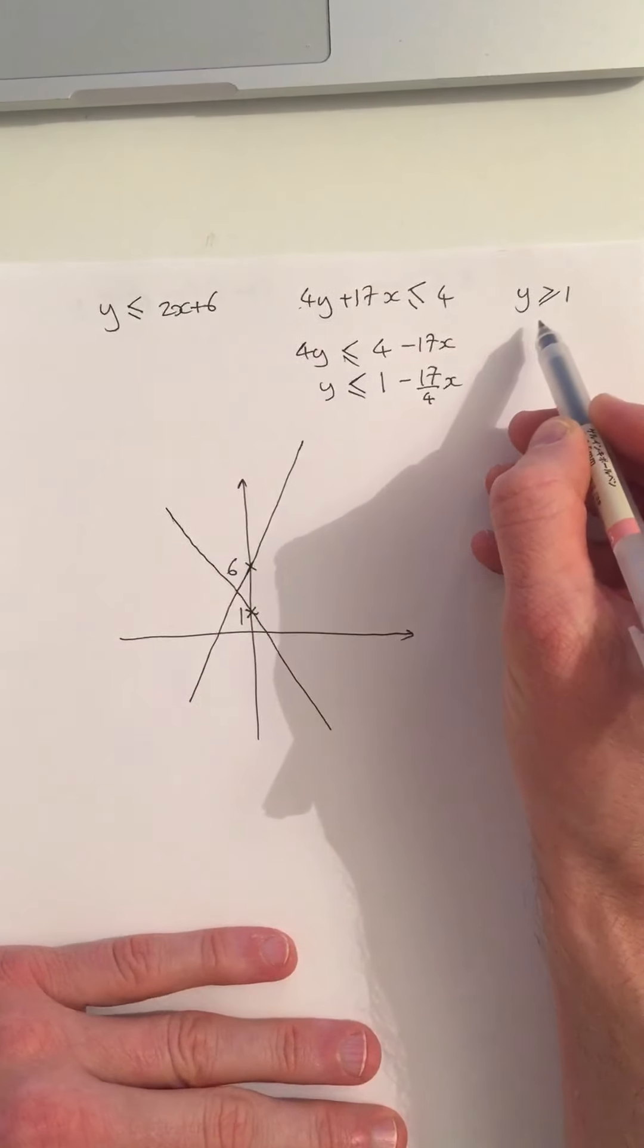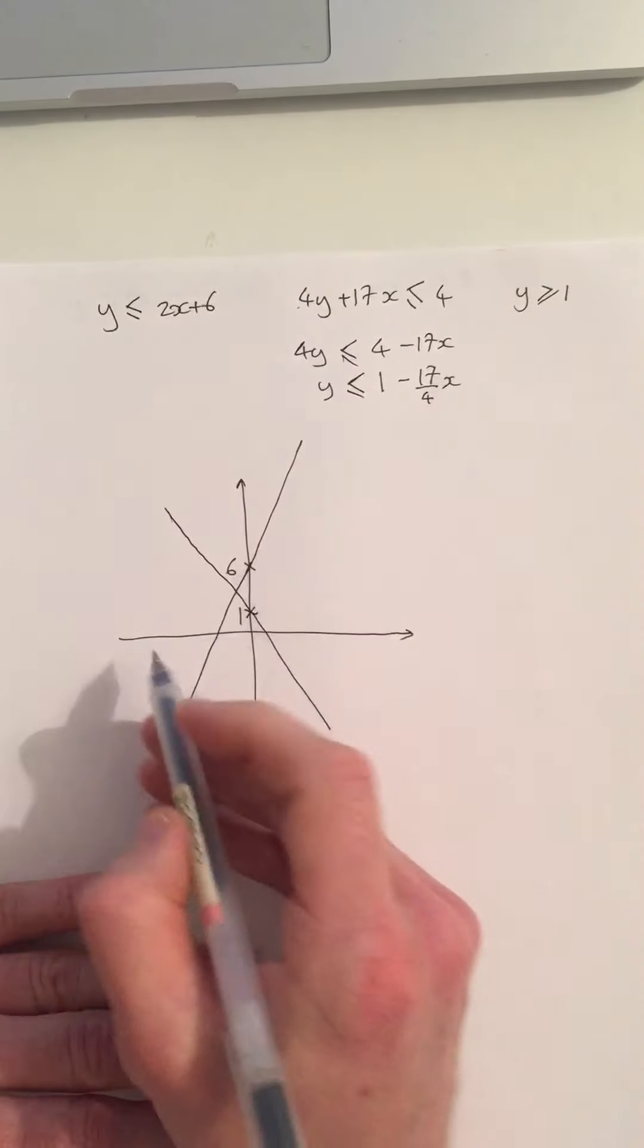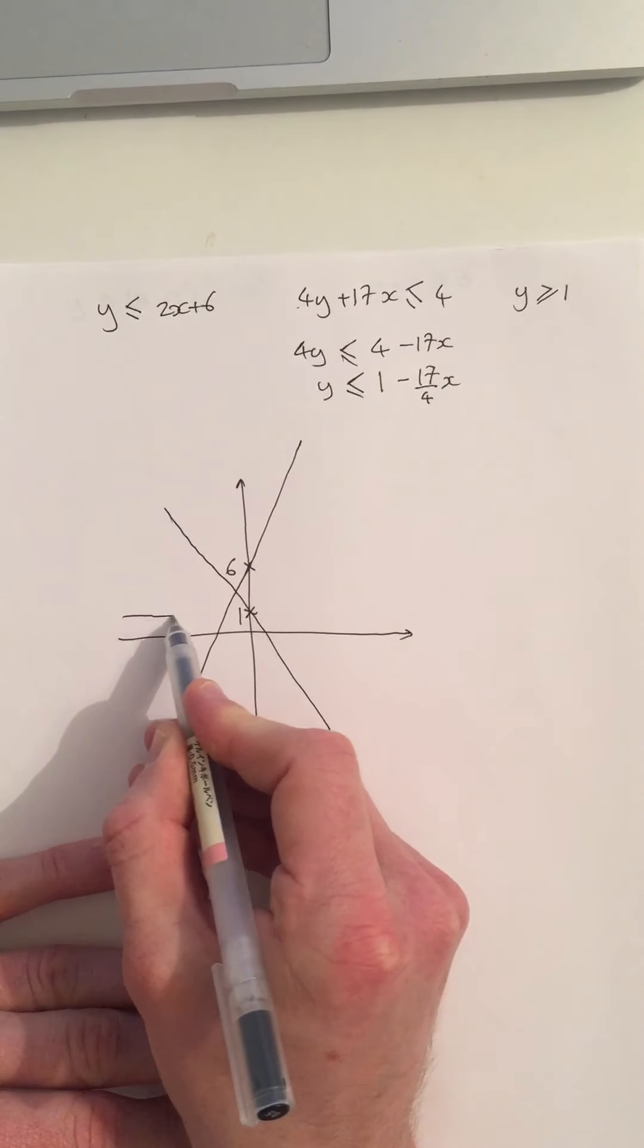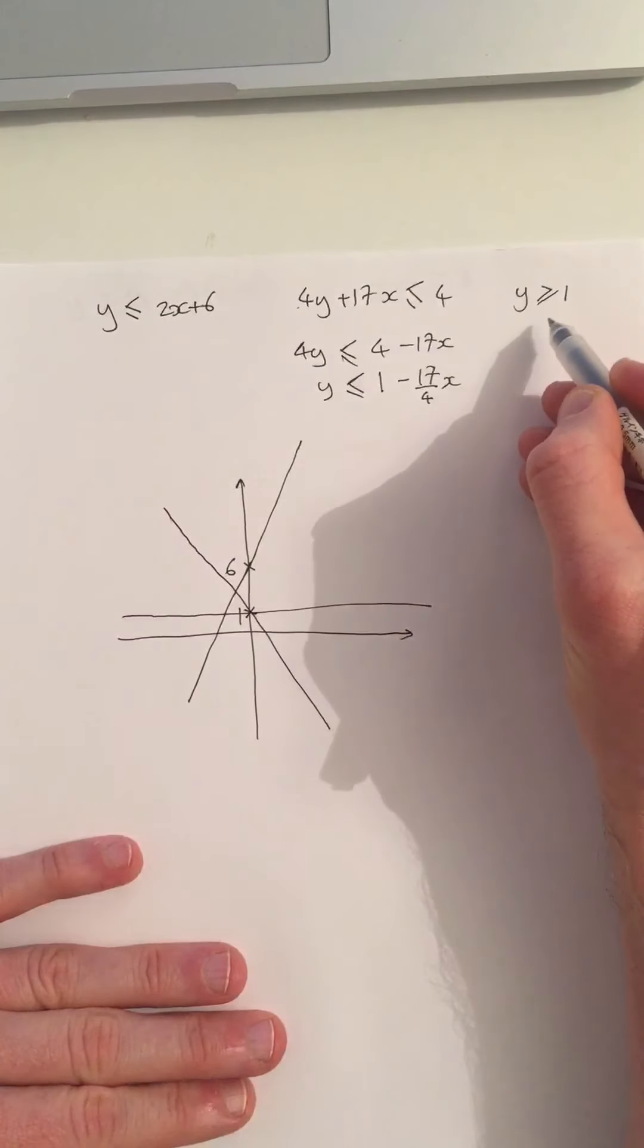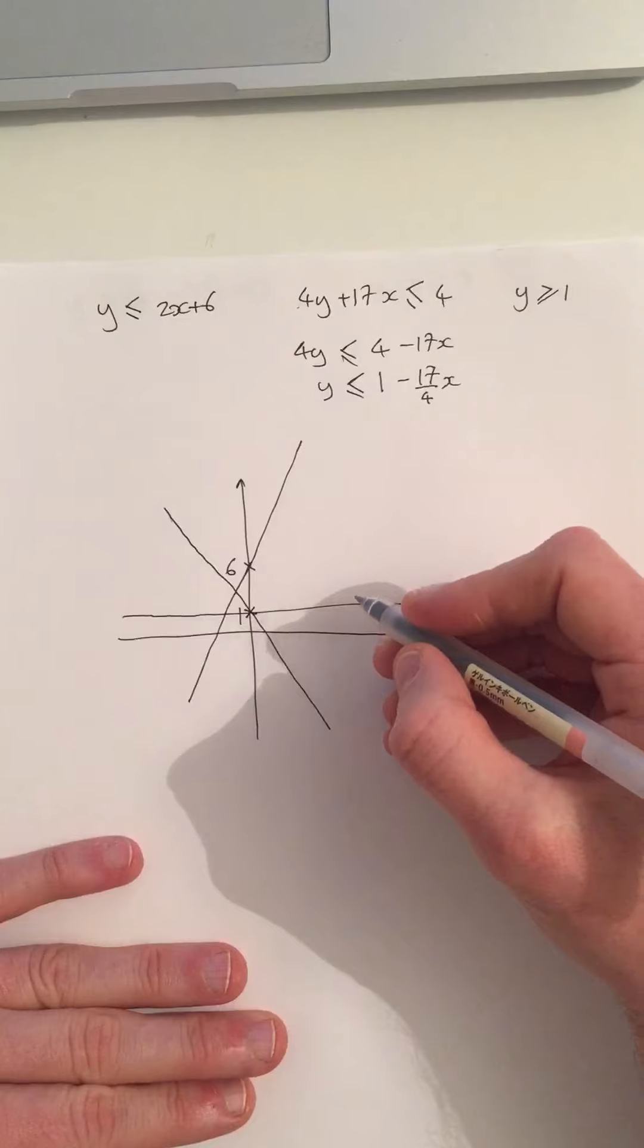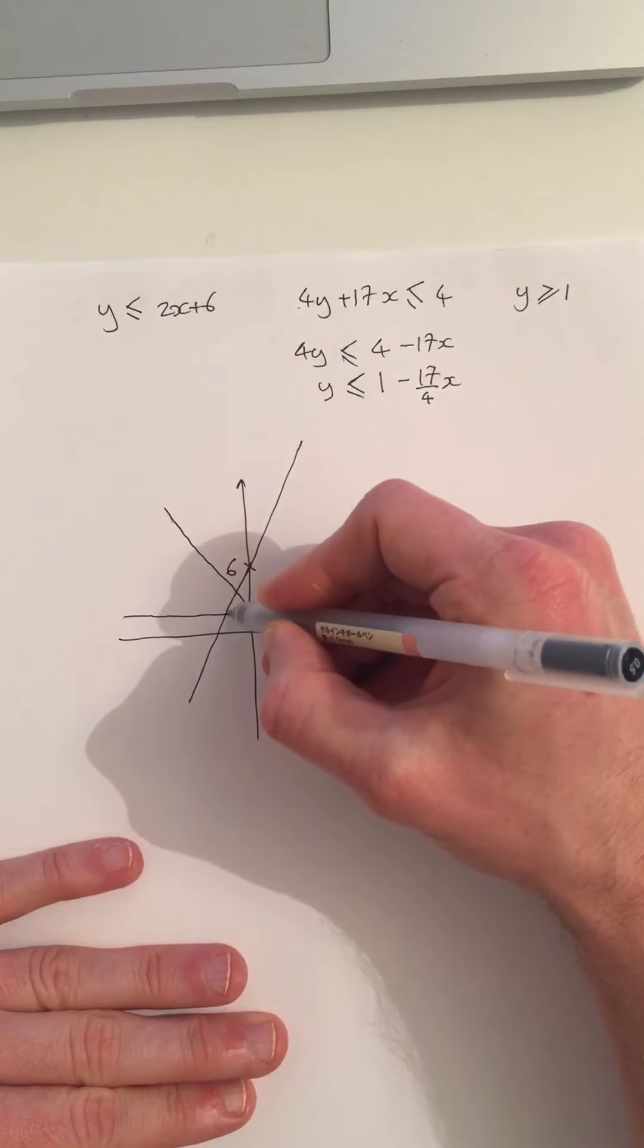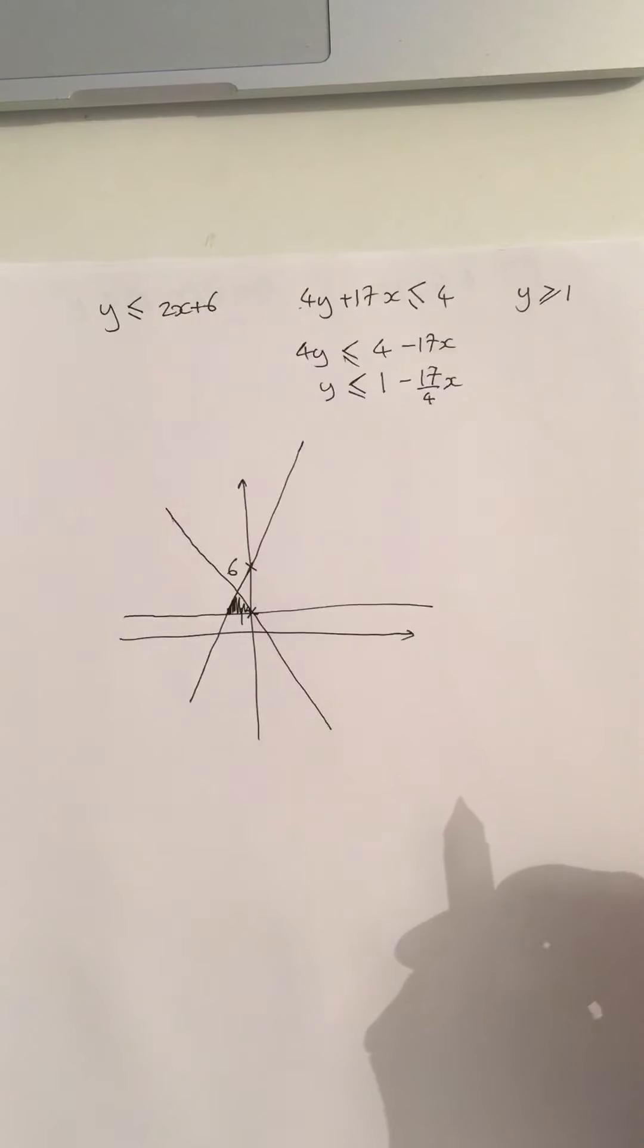The final rule is y has got to be greater than or equal to 1. So I know y equals 1 on this line across here. Y has to be greater than 1, so above this line. So the region that I'm actually looking at is this triangle on the inside here. There we go. So that's my answer to part A.